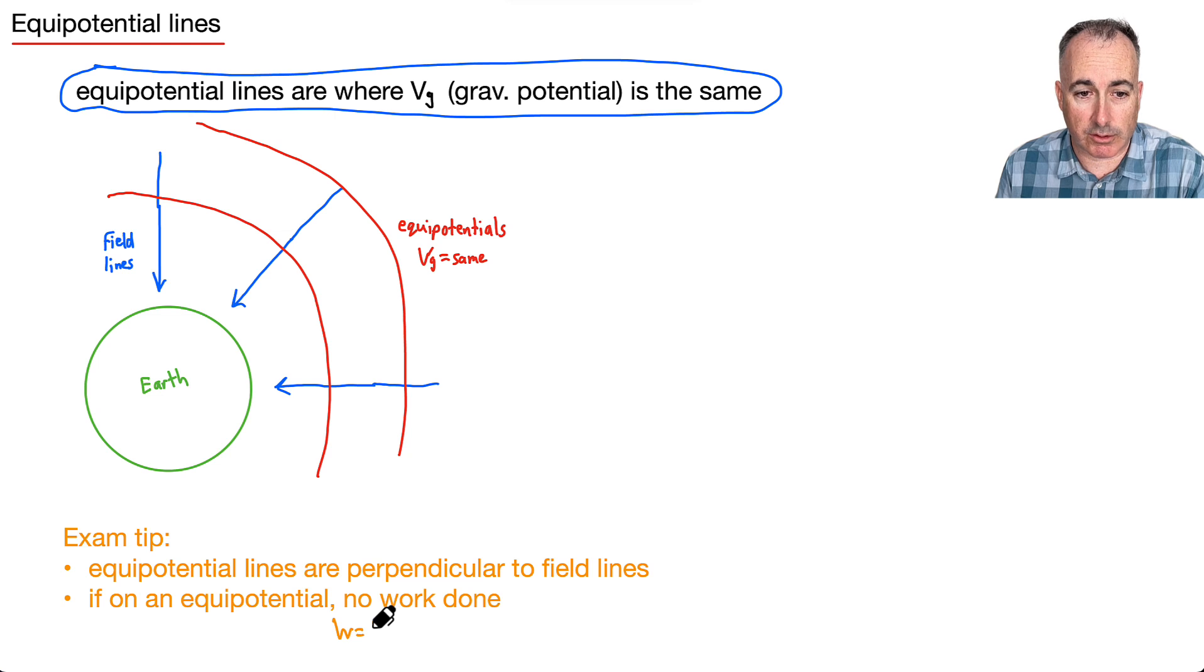And that's because, remember this equation then for work done. Work done was equal to m times delta Vg. So if this right here is zero, then so is this. I hope that makes sense. And of course, so this is an important piece here just to know how we're drawing these equipotentials.